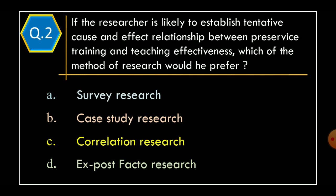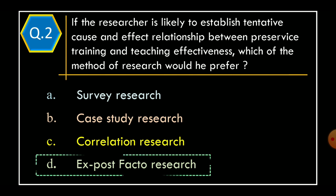Question 2. If the researcher is likely to establish a tentative cause and effect relationship between pre-service training and teaching effectiveness, which of the following methods of research would he prefer? Option A: Survey Research. Option B: Case Study Research. Option C: Correlation Research. Option D: Ex Post Facto Research. The correct option is Option D, Ex Post Facto Research.